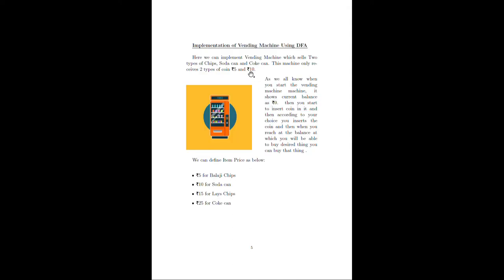Now think about the vending machine. This vending machine has some kind of chips and cans. This machine only receives two types of coins: rupees 5 and rupees 10. As we all know, when we start every vending machine it shows us the current balance is 0, hence we will call this the starting state.